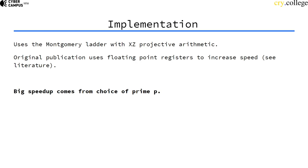But I just want to mention that a very big speed up comes from the choice of the prime p which is very close to a power of 2.